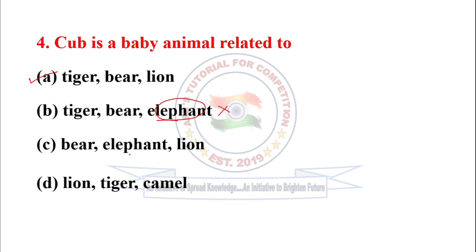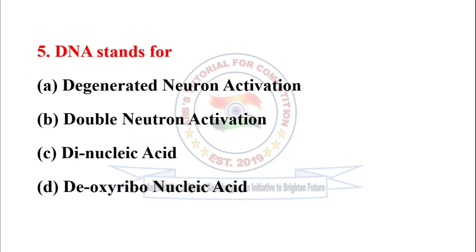Similarly, in option C elephant is also there so it is also incorrect, and in option D camel is there, so those options are wrong. Next question: DNA stands for deoxyribonucleic acid, so option D is correct.